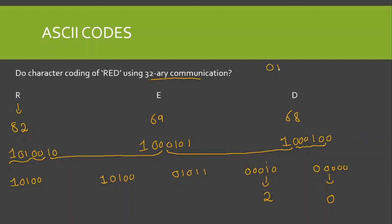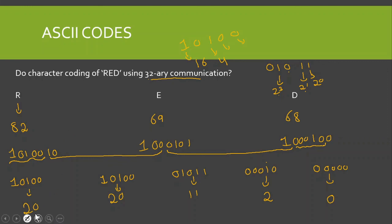Converting each 5-bit group to decimal: the group 00000 equals 0. The group 00010 equals 2, since the second bit is 2^1. The group 01011 equals 8+2+1=11. The group 10100 equals 16+4=20, where 2^4=16 and 2^2=4. The other group 10100 also equals 20. So the 32-ary symbol sequence for RED is: 20, 20, 11, 2, 0. This completes the ASCII encoding of the word RED into 32-ary communication.